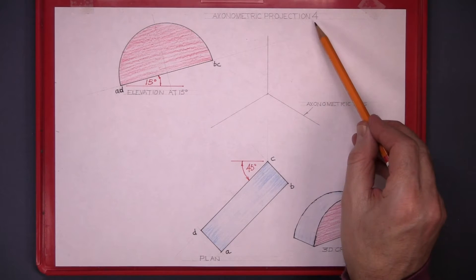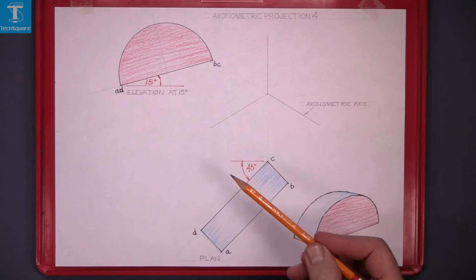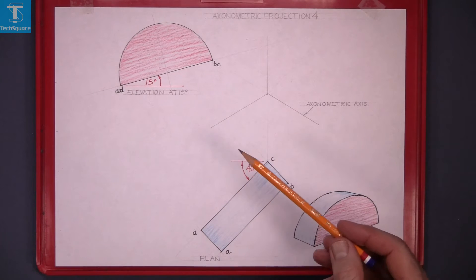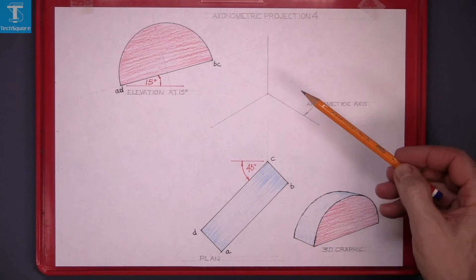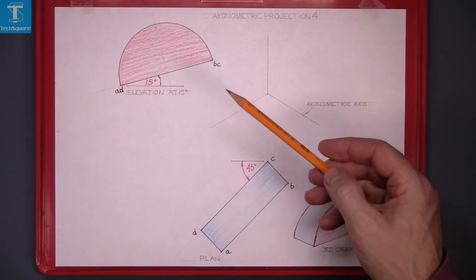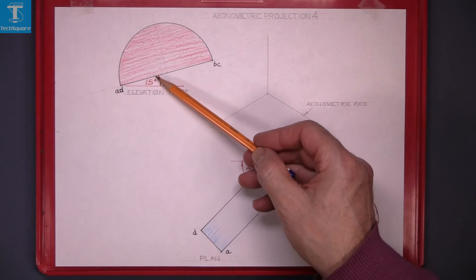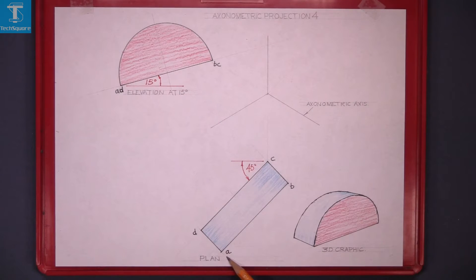Axonometric projection 4. The purpose of this exercise is to demonstrate how to draw a circle in isometric projection using axonometric projection. Given the axonometric axis, the elevation drawn at 15 degrees and the plan drawn at 45 degrees, and also a 3D graphic of the solid.